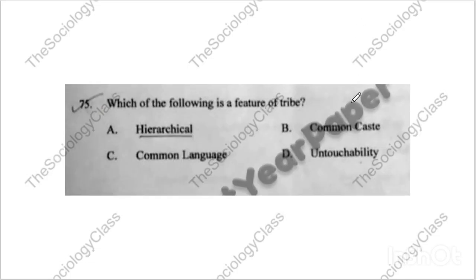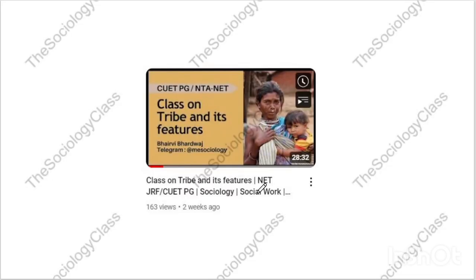Question seventy-five: 'Which of the following is a feature of a tribe?' The correct answer is C — common language is a very important feature of a tribe. I have already discussed tribe features and related content in detail. Please watch that part.